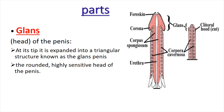Now, what is the glans? The glans is the head of the penis. It is rounded in shape, and its tip is expanded into a triangular structure known as the glans penis. It is a rounded and highly sensitive head of the penis because there are more sensory nerve supplies in the glans.